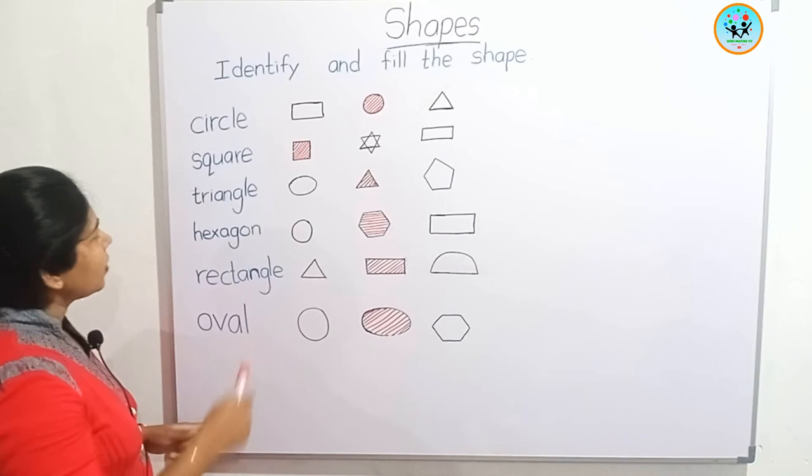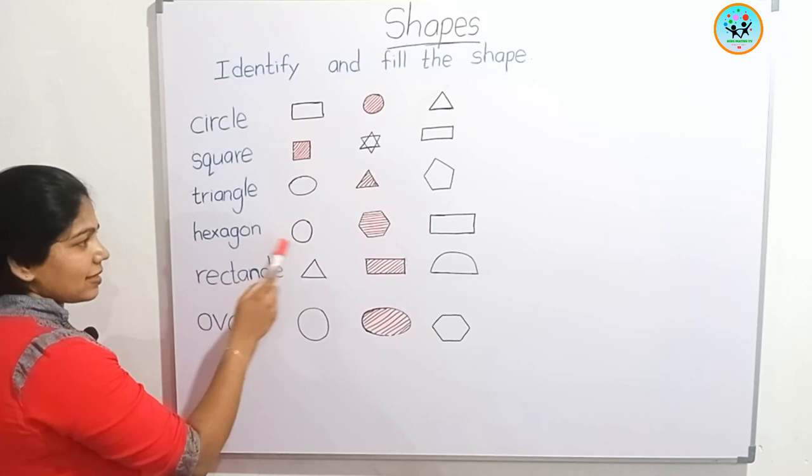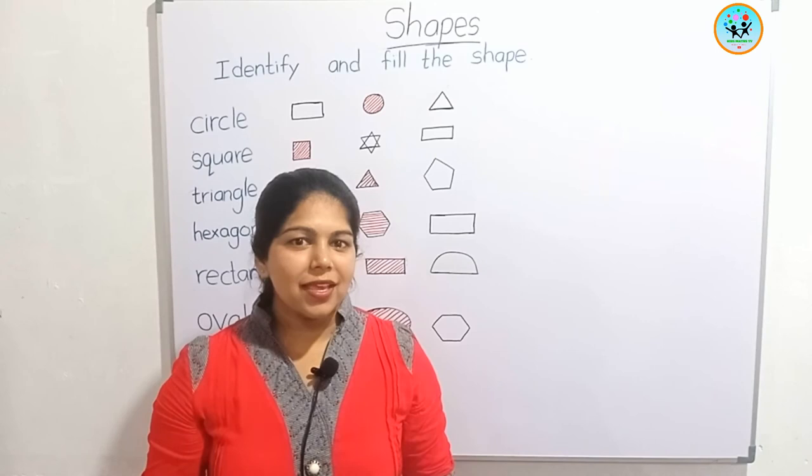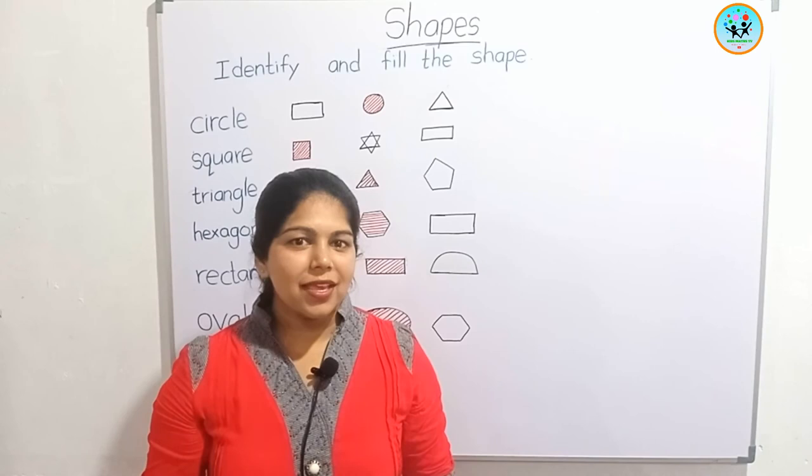Circle, square, triangle, hexagon, rectangle, oval. Students, today you learnt different shapes around us. Subscribe to my YouTube channel and share and like our videos. Hope to see you with a new lesson. Have a nice day, goodbye!